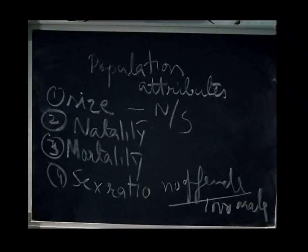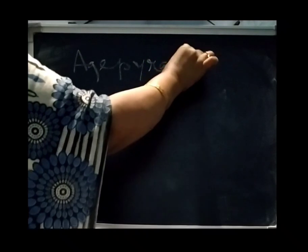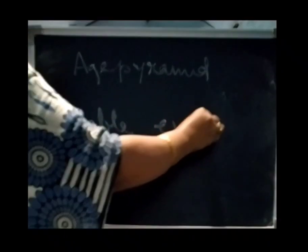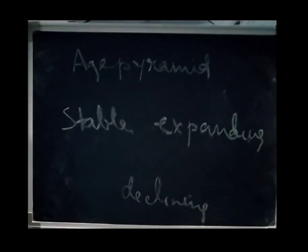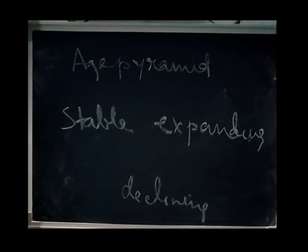Now we will discuss age pyramids. There are three kinds of age pyramid. Population at any given time is composed of individuals of different ages. When age distribution is plotted for individuals of each age group, it is called an age pyramid. Age pyramids can be stable, expanding, or declining.